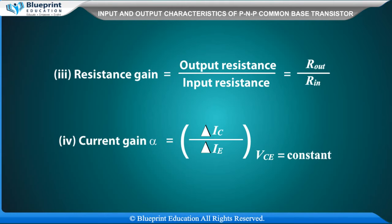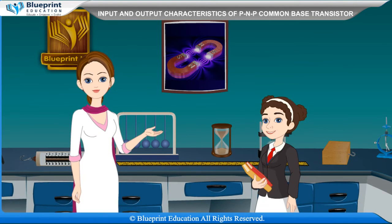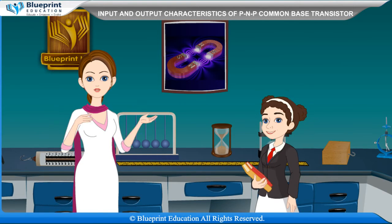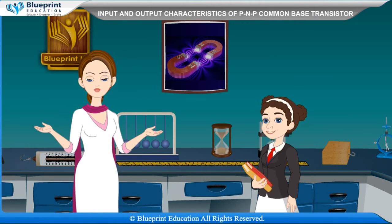Current gain alpha is equal to delta IC divided by delta IE. Voltage gain AV is equal to output voltage divided by input voltage, which equals Rout multiplied by delta IC divided by Rin multiplied by delta IE, i.e., resistance gain multiplied by current gain. Let's do an experiment to set up a common base transistor circuit and study its input and output characteristics and calculate its current gain.